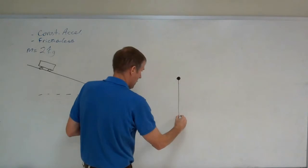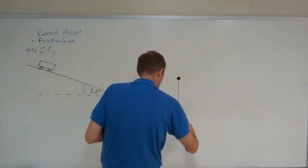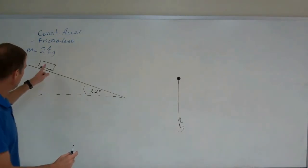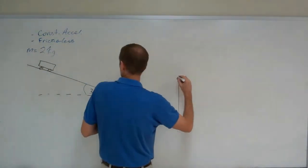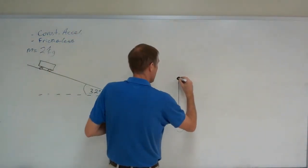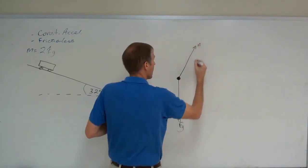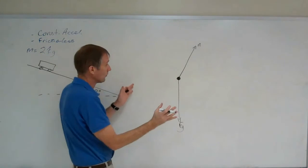You have weight going straight down. Normal force perpendicular to the ramp, and then there's no friction.